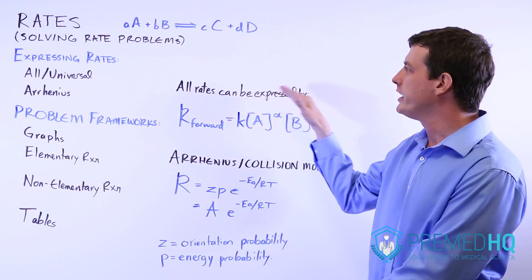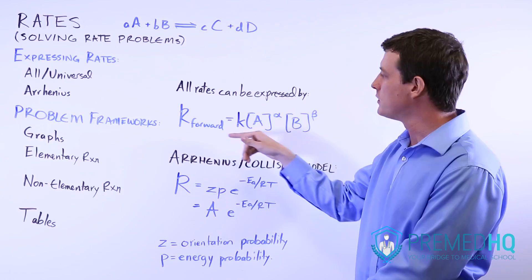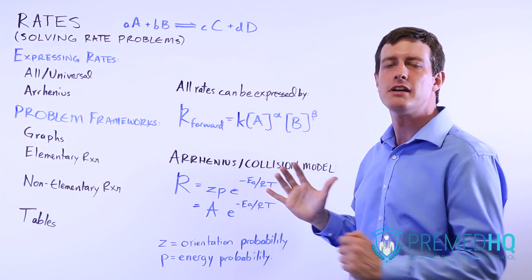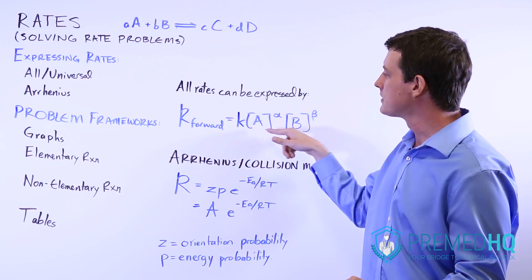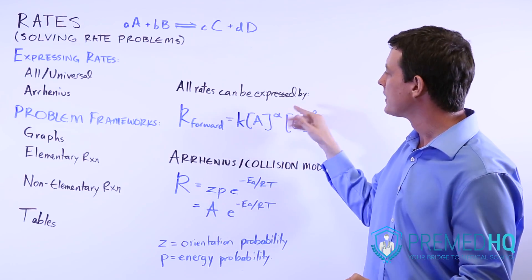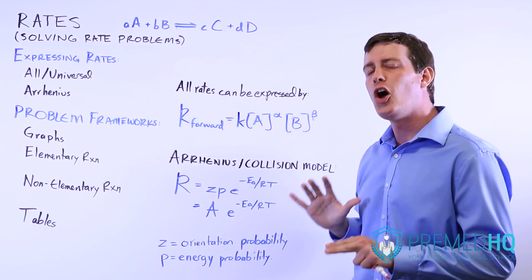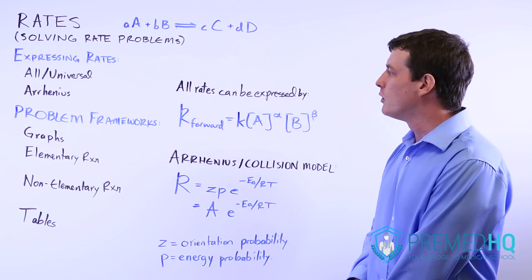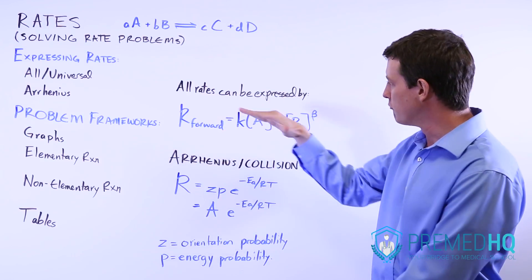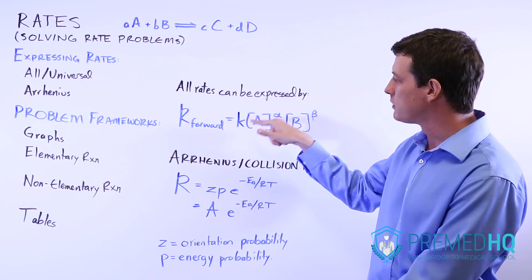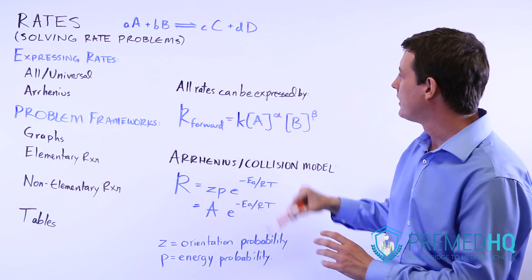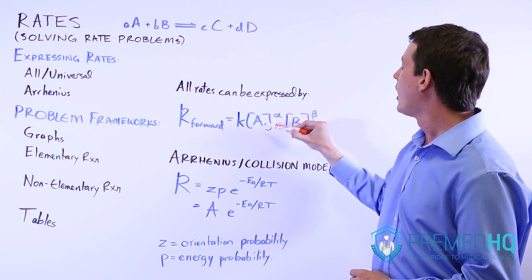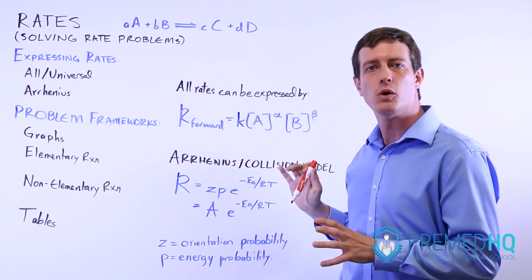The universal rate equation is that the forward rate equals some rate constant, which is experimentally determined, times the reactants raised to some coefficient, which isn't always going to be the stoichiometric coefficient, but sometimes will be. So you can always express rates using this formula: rate of the forward reaction equals some rate constant times the reactants raised to their stoichiometric coefficients, or not necessarily their stoichiometric coefficients, but raised to some coefficients.